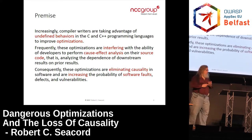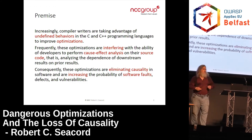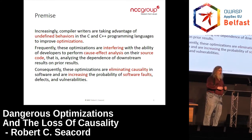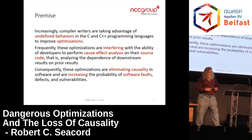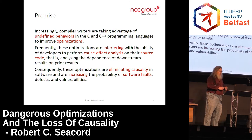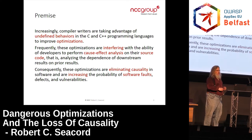Increasingly compiler writers are taking advantage of undefined behaviors in C and C++ programming languages to improve optimizations. I've been participating on the C standards committee since about 2004, so I was actually involved in the development of C11 from start to end. During that time we like to think the language is getting better and more secure, but actually it's becoming less secure. The biggest driver for the evolution of C is opportunity for greater optimization, and the less well-defined the language is, the more opportunity you have to optimize it.